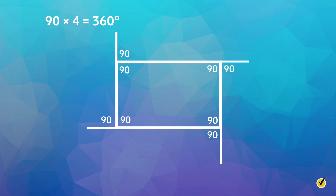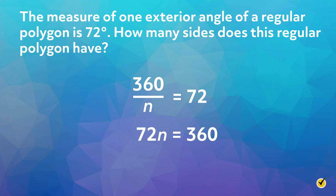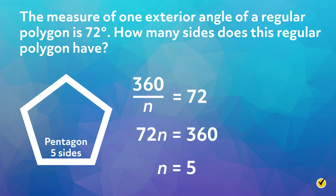This knowledge can also help us solve problems. For example, the measure of one exterior angle of a regular polygon is 72 degrees — how many sides does this regular polygon have? Since this is a regular polygon and the sum of all exterior angles is 360 degrees, we create the equation 360 over n equals 72. We eliminate the fraction to get 360 equals 72n, then divide both sides by 72 to isolate the variable, giving us n equals 5. Therefore, the polygon has 5 sides, which is called a pentagon. I hope you enjoyed this video about the sum of interior angles of polygons. Thanks for watching and happy studying!